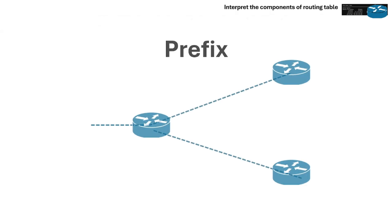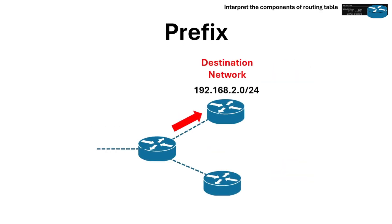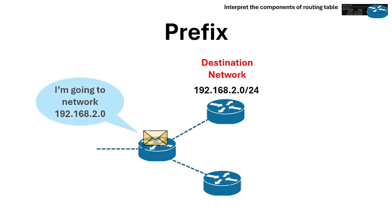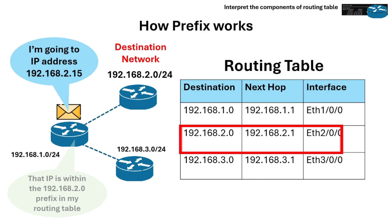Let's now discuss prefix. The prefix is the destination network the route is for — usually a network address with a subnet mask, like 192.168.2.0/24. It tells the router where the traffic is going. Routers use prefixes to match the destination IP address of a packet with the appropriate route in the routing table. If the destination IP address falls within the range defined by the prefix, the router knows which path or next hop to use to forward the packet.